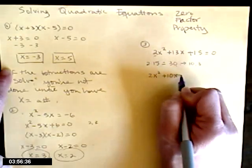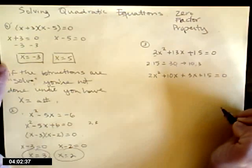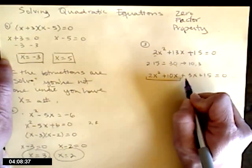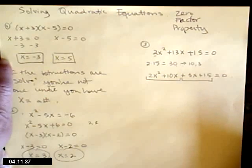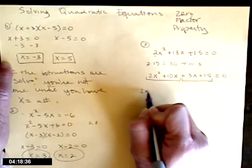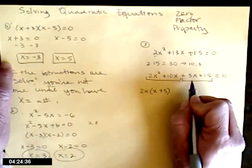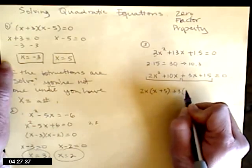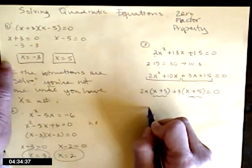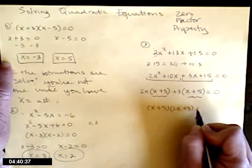So I rewrite as 2x squared plus 10x plus 3x plus 15. In the first pair, the greatest common factor is 2x, leaving x plus 5. In the second pair, the greatest common factor is 3, also leaving x plus 5. Now I have x plus 5 as a common factor in both groups, so I factor it out, leaving x plus 5 times 2x plus 3 equals 0.